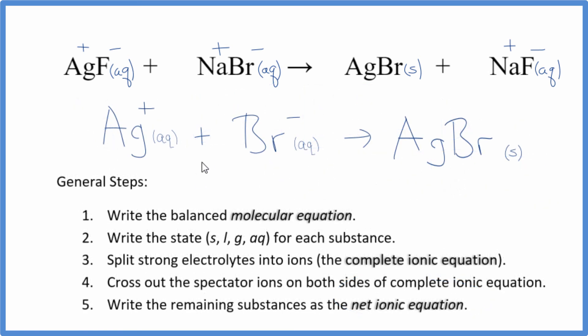So this is the balanced net ionic equation for AgF plus NaBr. You'll note that charge is balanced. We have a positive and a negative. That balances out. Net charge is zero. And over here, this is neutral. So net charge zero as well. And the atoms are also balanced.